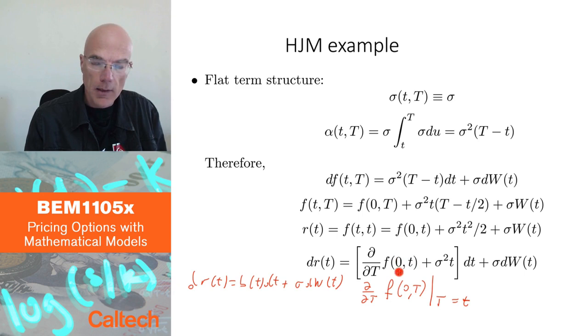Actually, for any sigma, you still have the flexibility to choose sigma. So at least at time zero, your model will be perfectly calibrated if you use this as your drift.